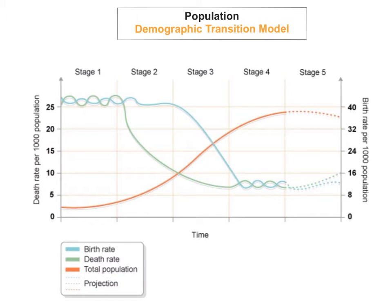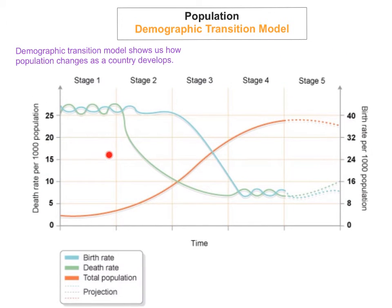What is the demographic transition model? Well, basically it shows us how the population changes as a country develops. So as a country and an economy develops, they change stages and they go from stage 1 all the way to being the most developed, stage 5. Stage 1 is the least developed, stage 5 is the most developed. As each country develops, it goes through the different stages, stage 1 to 5, and they experience some predictable set of changes.